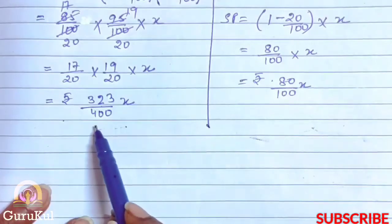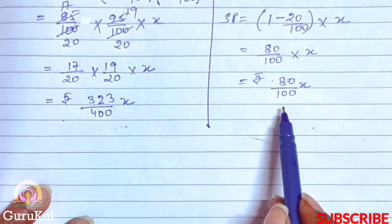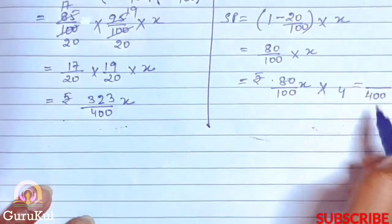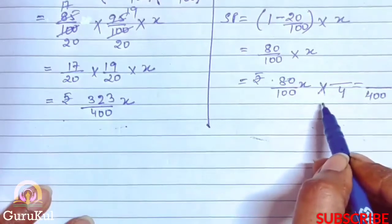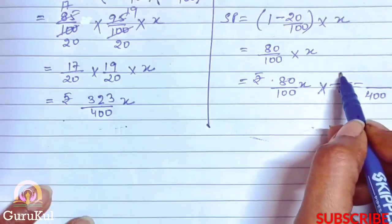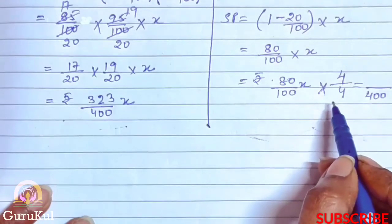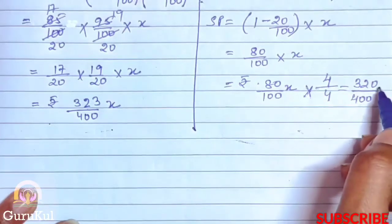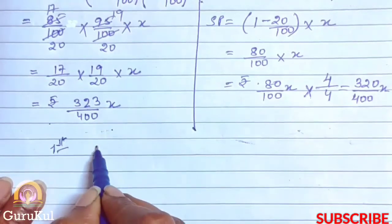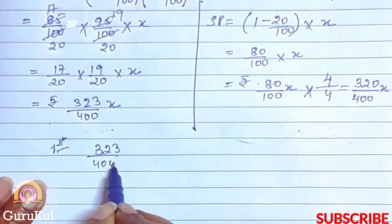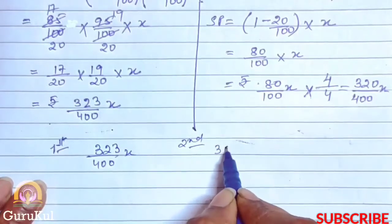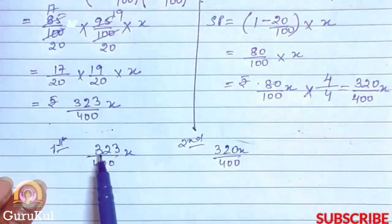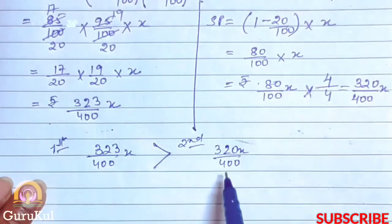The denominators are 400 and 100. To make 100 equivalent to 400, we multiply by 4. When we multiply the denominator by 4, we also multiply the numerator by 4. So the second dealer's SP becomes 320x/400. Now comparing: first dealer is 323x/400 and second dealer is 320x/400. Since 323 is greater than 320, no doubt the second offer is better.